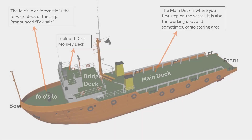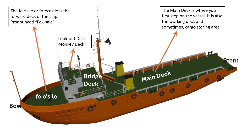Just behind the forecastle deck is the superstructure, which houses the control room of the vessel which we call bridge. The topmost deck of the bridge is called the lookout deck or monkey deck. The main working part of the deck area is called main deck.